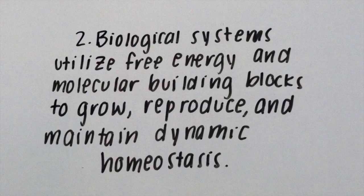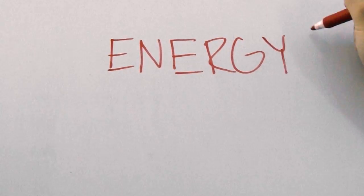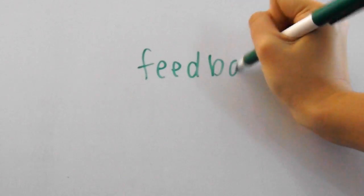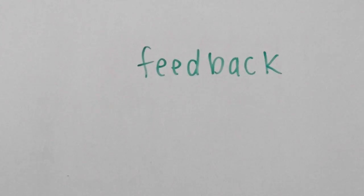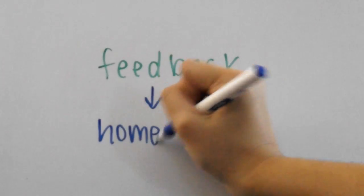The second big idea is that biological systems utilize free energy and molecular building blocks to grow, to reproduce, and to maintain dynamic homeostasis. This section is all about energy, which is mainly photosynthesis and respiration, and something called feedback. Feedback systems are extremely important to organisms as they maintain a constant internal environment, which is homeostasis.